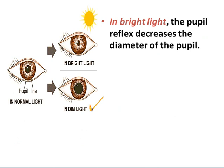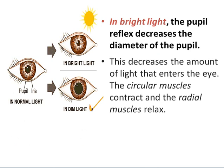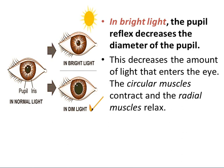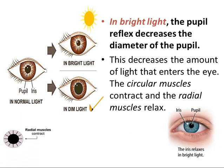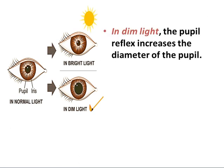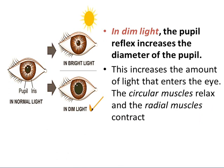In bright light, the pupil reflex decreases the diameter of the pupil, which decreases the amount of light entering the eye. The circular muscles contract and the radial muscles relax. The pupil constricts or narrows to prevent too much light from entering and damaging the retina. In dim light, the pupil reflex increases the diameter of the pupil, increasing the amount of light that enters the eye. The circular muscles relax and the radial muscles contract.